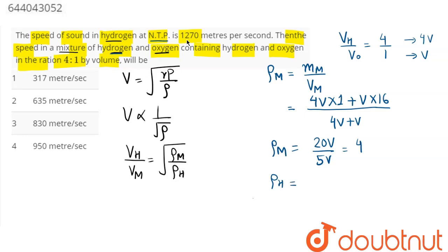Now density of hydrogen can be written as mass of hydrogen by volume of hydrogen. Volume of hydrogen here is 4v, and mass of hydrogen can be written as 4v into 1, so this can be written as 1.